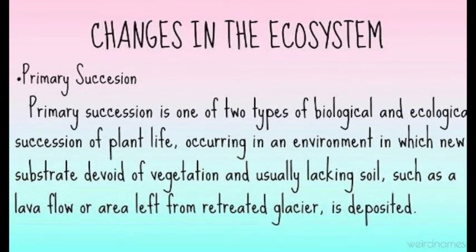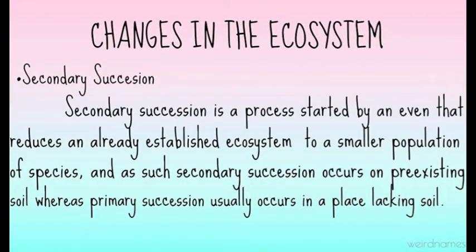Primary succession is one of two types of biological and ecological succession of plant life, occurring in an environment devoid of vegetation and usually lacking soil, such as a lava flow or an area left from a retreated glacier. Secondary succession is a process started by an event that reduces an already established ecosystem to a smaller population of species, and it occurs on pre-existing soil, whereas primary succession usually occurs in a place lacking soil.